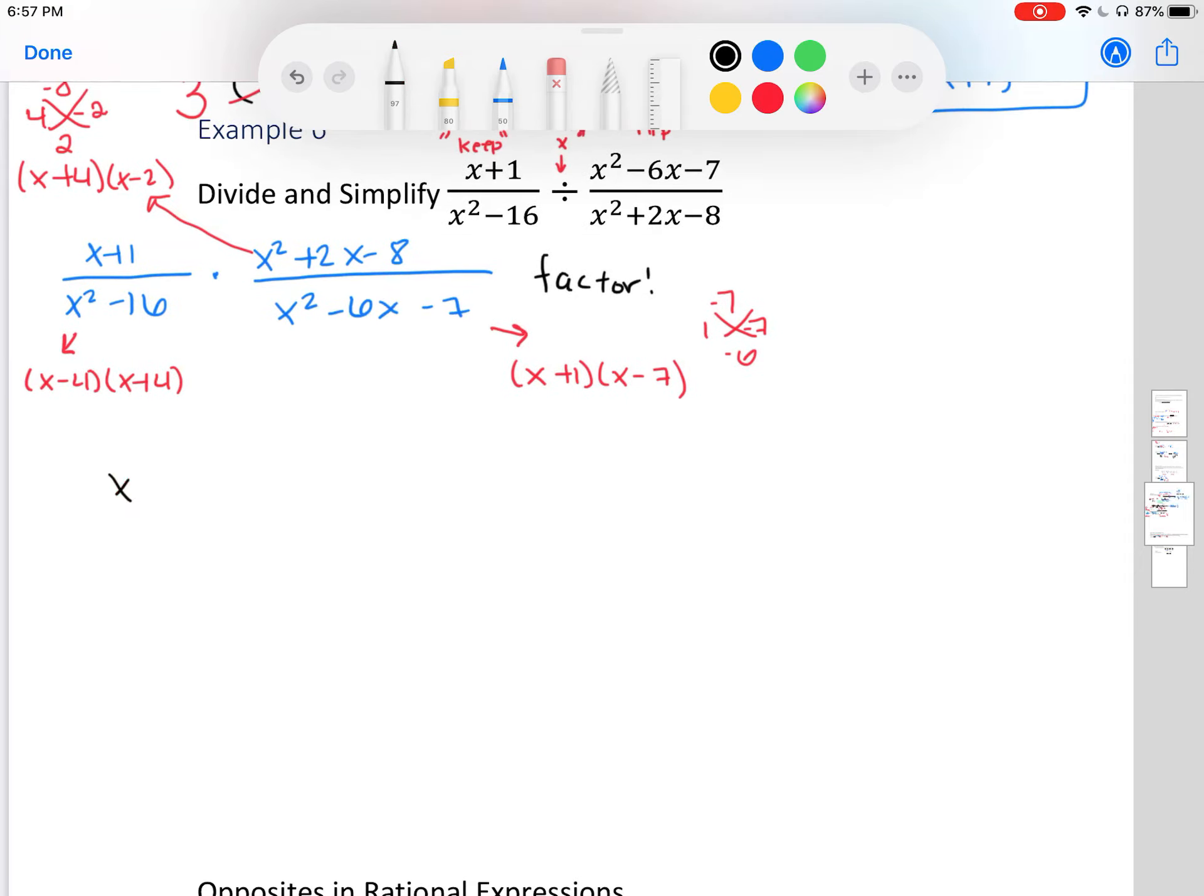So in my numerator, I have x plus 1. And my numerator factors to be x plus 4 times x minus 2. Okay, let's cancel out. This is my favorite part. So I see x plus 4 and x plus 4. I see x minus 2 canceling as well.